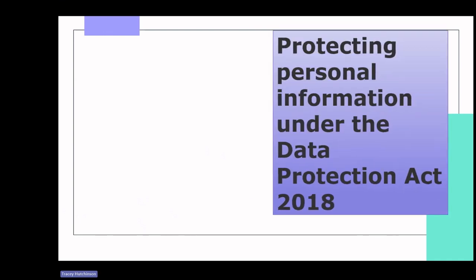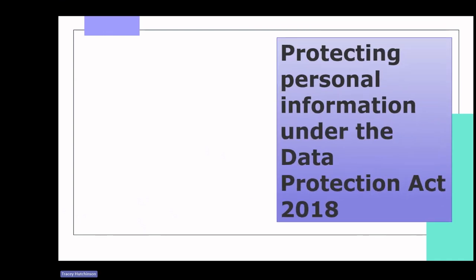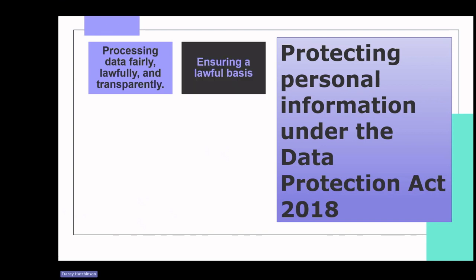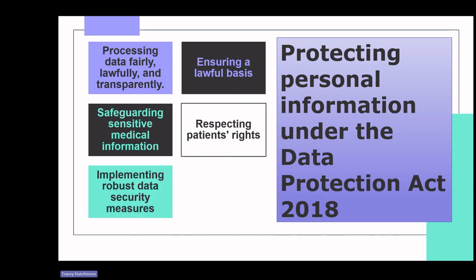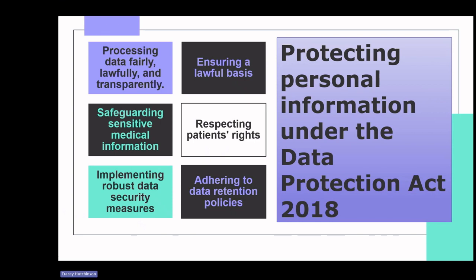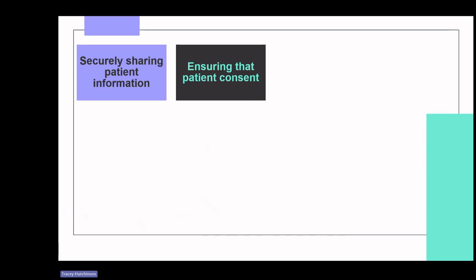Now let's explore protecting personal information under the Data Protection Act 2018. This encapsulates processing data fairly, lawfully and transparently; ensuring a lawful basis for processing patient data; safeguarding sensitive medical information when processing special category data; and respecting patients' rights including access, rectification, erasure and restriction. It also involves implementing robust data security measures to protect against unauthorised access and breaches, adhering to data retention policies to determine appropriate record-keeping periods, and securely sharing patient information with other healthcare professionals or organisations. Patient consent, when used, must be freely given, specific and informed.